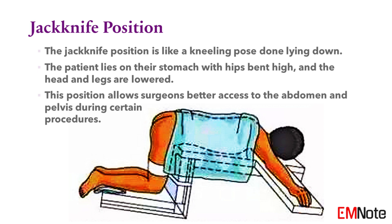Jackknife position. The jackknife position is like a kneeling pose done lying down. The patient lies on their stomach with hips bent high, and the head and legs are lowered. This position allows surgeons better access to the abdomen and pelvis during certain procedures.